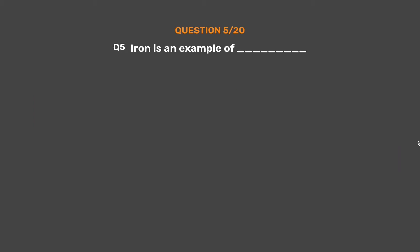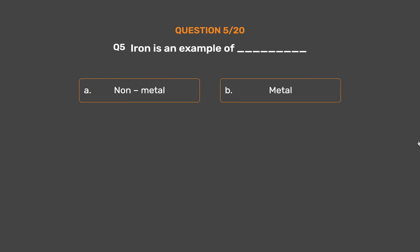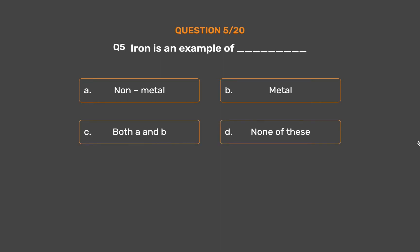Question number 5. Iron is an example of ___. Option A: Non-metal. Option B: Metal. Option C: Both A and B. Option D: None of these. The correct answer is Option B: Metal.